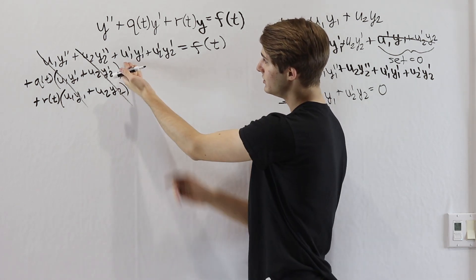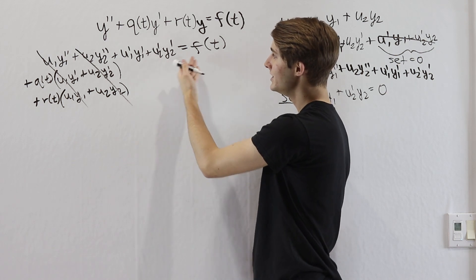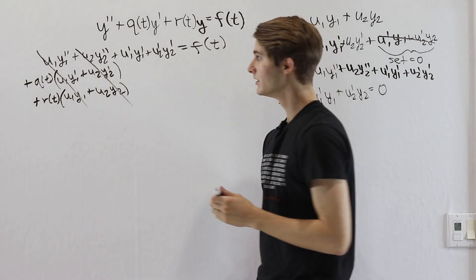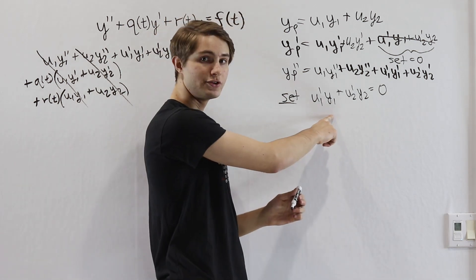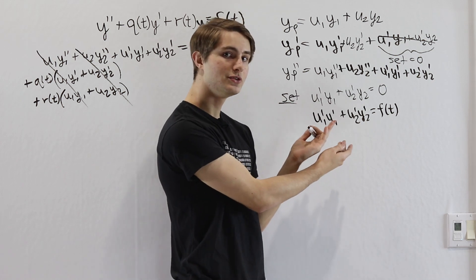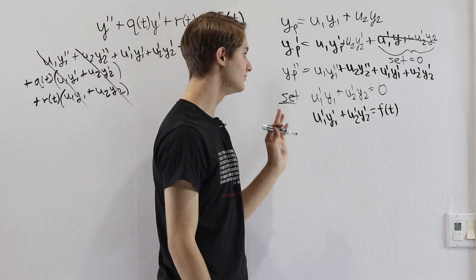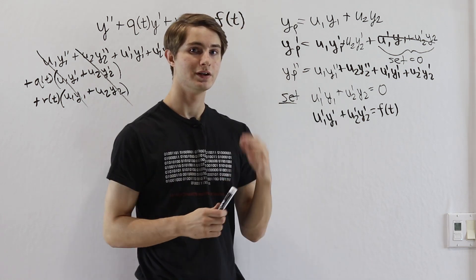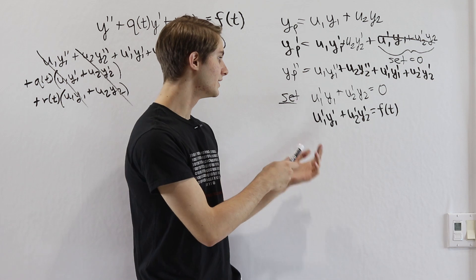So all we have left is u1 prime y1 prime plus u2 prime y2 prime equals f(t). So I'm going to write our second constraint down next to the first one that we set here. So this is the system of two equations that we want to use when we're solving for our answers through variation of parameters. Now what we're actually going to do here is solve for u1 and u2.